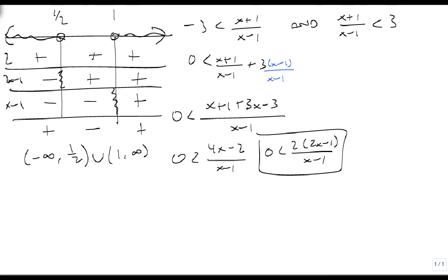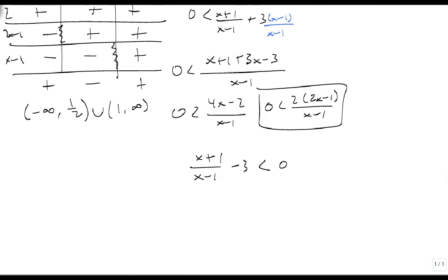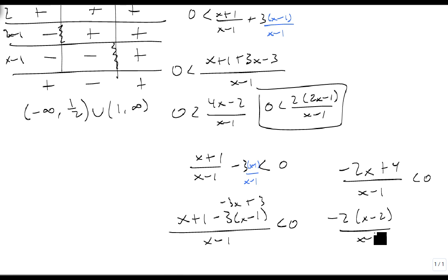The other one's going to work somewhat the same. We're going to have (x + 1)/(x - 1) - 3 is less than 0. So again, we multiply the top and bottom by x - 1. We get (x + 1 - 3(x - 1))/(x - 1), which is (x + 1 - 3x + 3)/(x - 1) = (-2x + 4)/(x - 1) is less than 0, or -2(x - 2)/(x - 1).